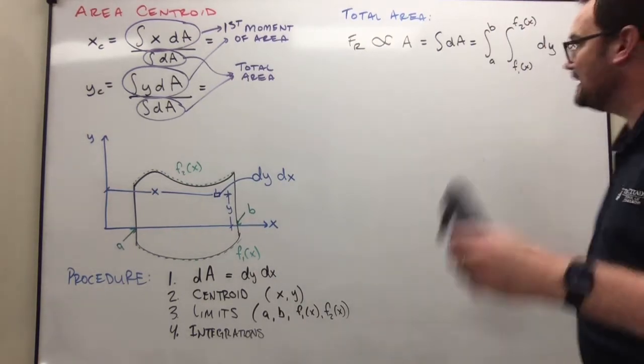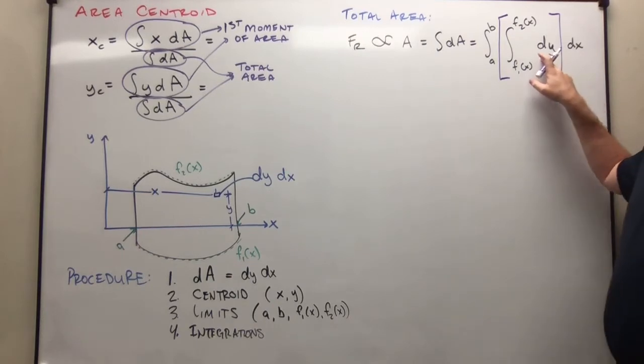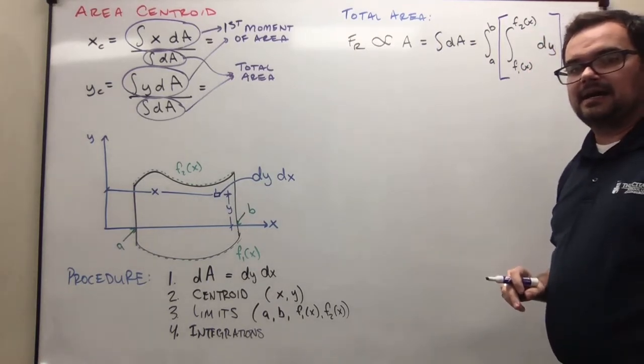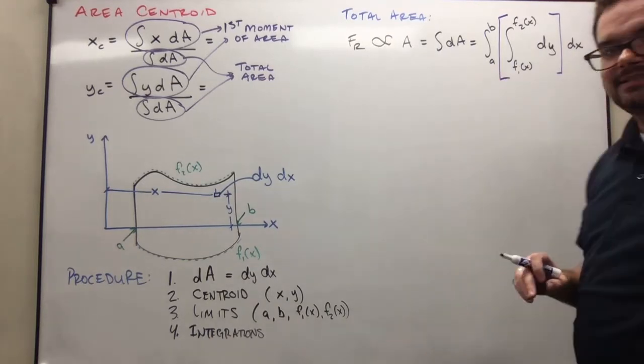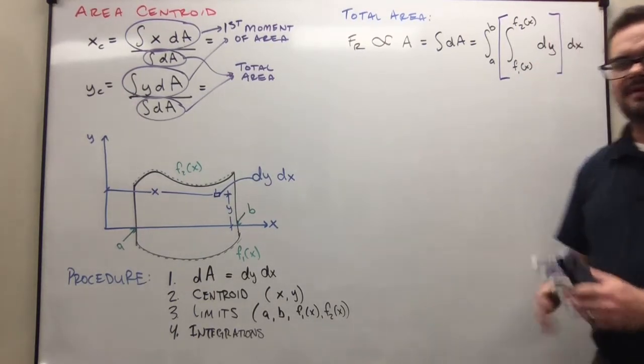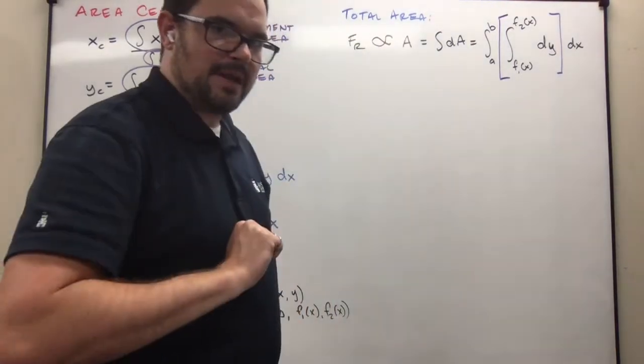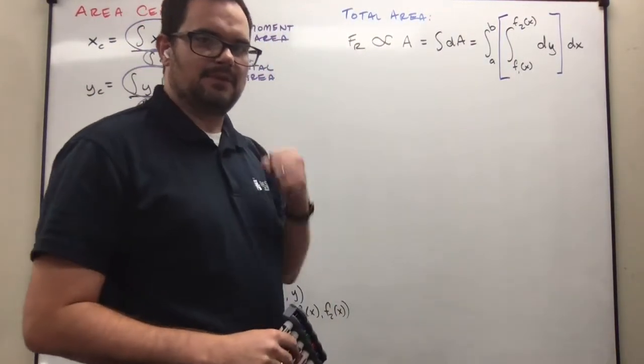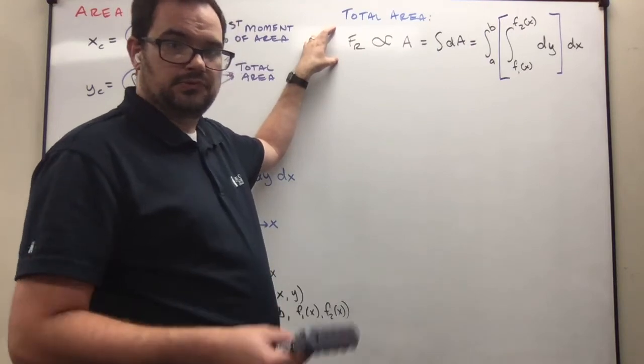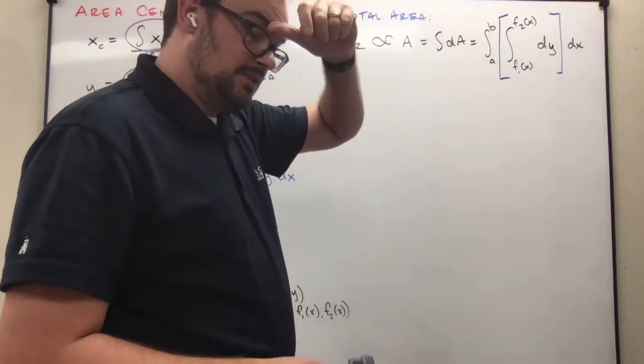And for those of you who haven't had Cal 3 yet, the way that we evaluate this is that we work the inner integration first. And so we'll do an integral here. So the integral of dy is y. And then we'll substitute in F2(x) minus F1(x) as my limit. And then we'll integrate whatever that is with respect to x. So we do the inside first, then the outside. Once you get to Cal 3, that'll be self-evident. I'm not going to give you anything too crazy to do, and I'm not going to have you do any integrations on exams. So hopefully the stress level dials back a little bit. So this would give us the total area. Now keep in mind, if we have a shape that we know the area of, like rectangles or circles or triangles, we don't have to do this.